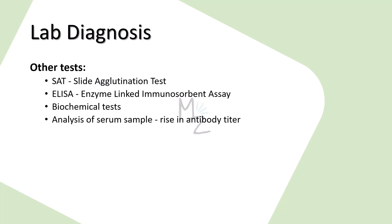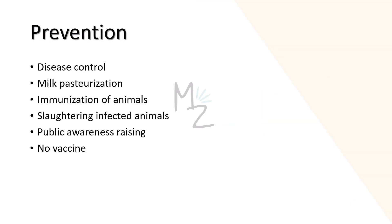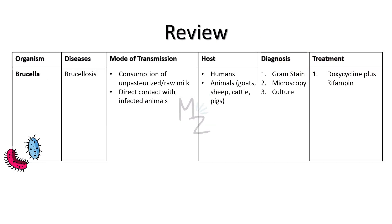Treatment: The treatment of choice is tetracycline — specifically doxycycline — and there is no significant resistance to these drugs. Prevention of brucellosis involves disease control measures including pasteurization of milk, immunization of animals, slaughtering of infected animals, and public awareness. There is no human vaccine available.